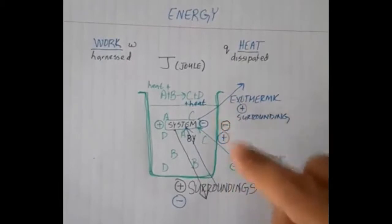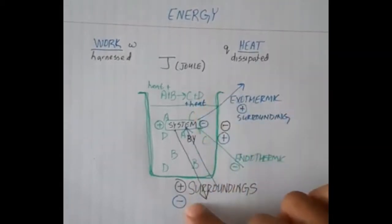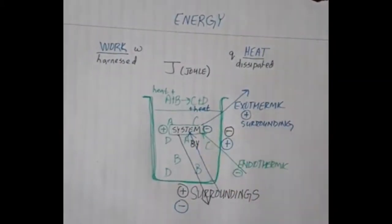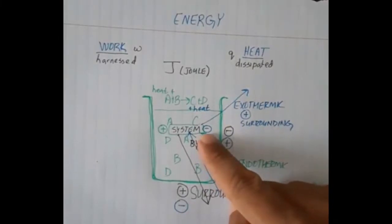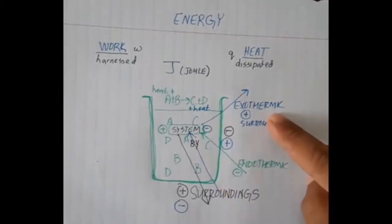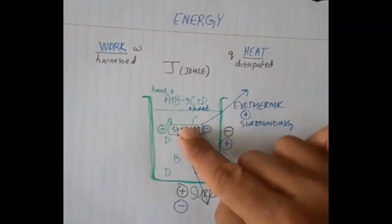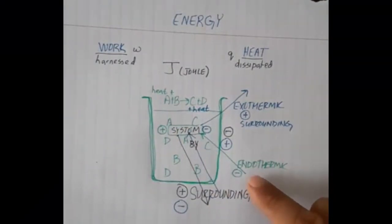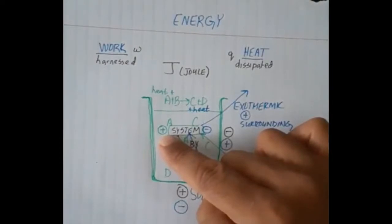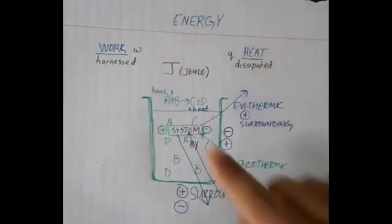As a quick review: work done by the system on the surroundings is negative for the system, positive for the surroundings. Work done by the surroundings on the system is negative for the surroundings and positive for the system. When exchanging heat, a system that releases heat is an exothermic reaction — negative Q for the system, positive for the surroundings. If heat is absorbed from the surroundings into the system, that's an endothermic reaction — negative for the surroundings, positive for the system. In endothermic reactions, heat is a reactant; in exothermic reactions, heat is a product.